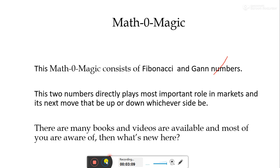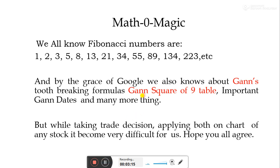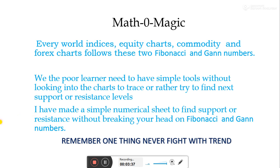You are all aware of Fibonacci and Gann numbers. Gann dates and tools are available on websites and YouTube videos. We know the Fibonacci numbers: 1, 2, 3, 5, 8, 13 and other parts. We also know how to use Gann Square of Nine. Some of us also know Gann dates when reversals take place. By combining this, we can see whether a stock is in uptrend or downtrend, where it will go, how far it will go in uptrend, and how far it will go in downtrend.